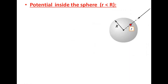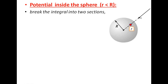Second condition: potential inside the sphere, r less than capital R. The electric field E at point P inside the sphere — the point is inside the shell at distance r less than capital R. The electric field inside the spherical shell is equal to zero by Gauss's law.